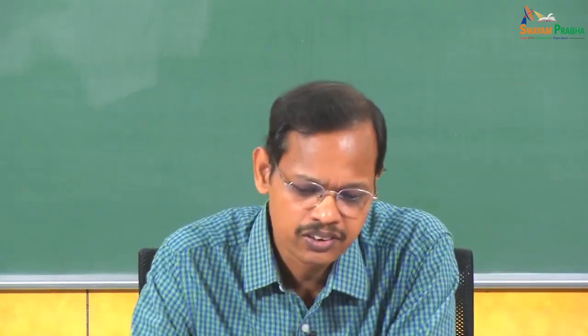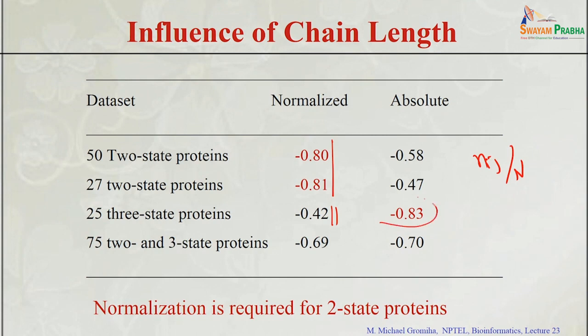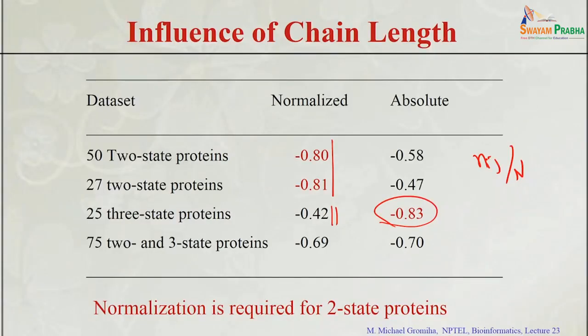An important distinction between 2-state and 3-state proteins concerns normalization. For 2-state proteins, normalization with N is needed — for example, the long-range order equation is N_ij divided by N. For 3-state proteins, if you normalize, the correlation values become very low, but without normalization it is 0.83. It is critical to normalize 2-state proteins but not 3-state proteins to obtain better performance in relating folding rates.